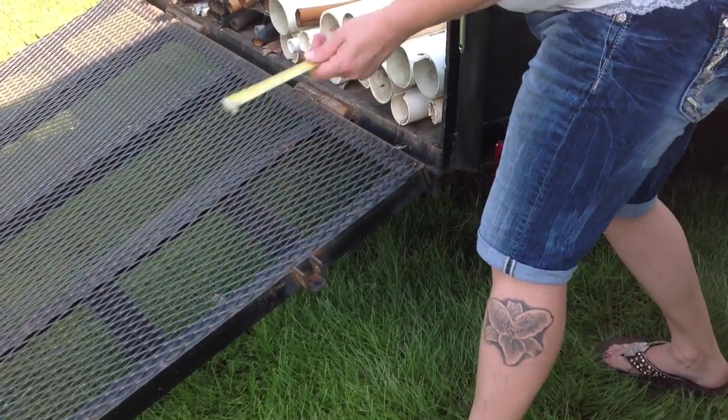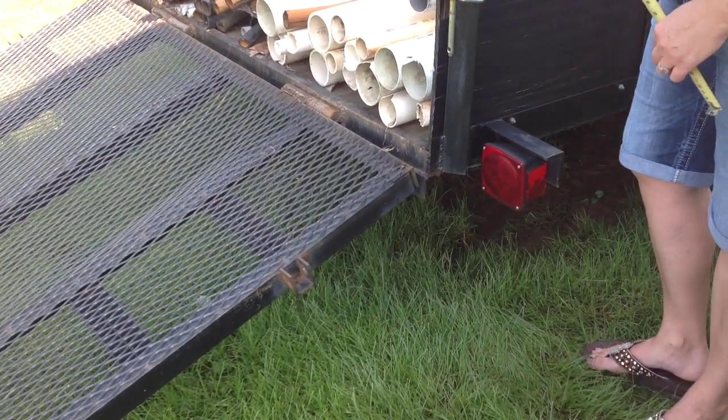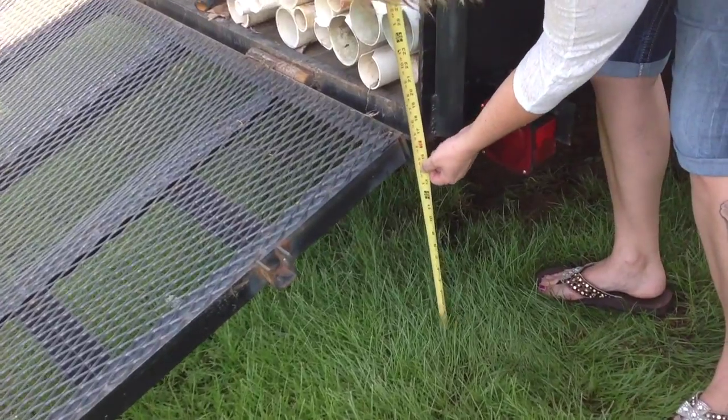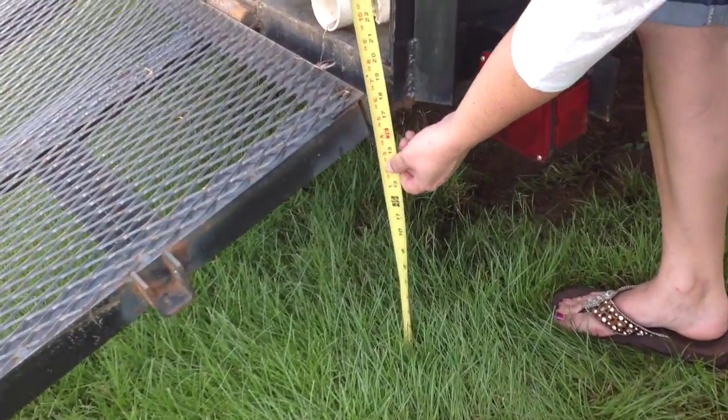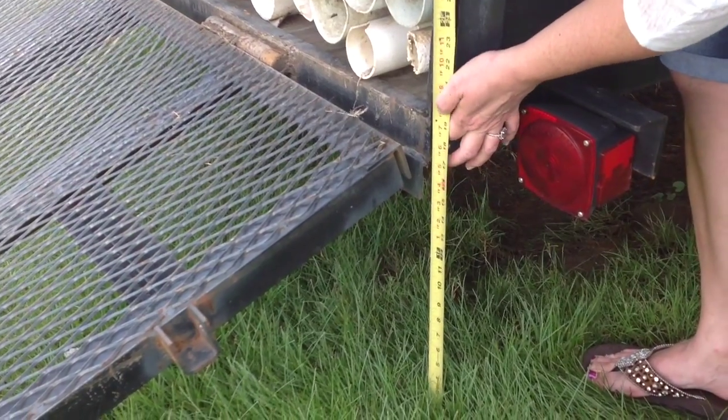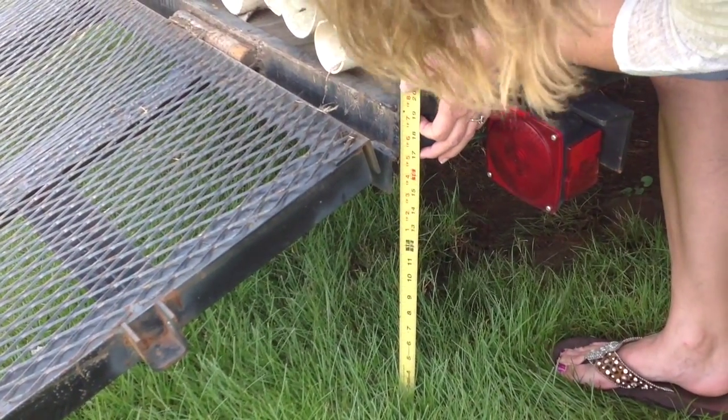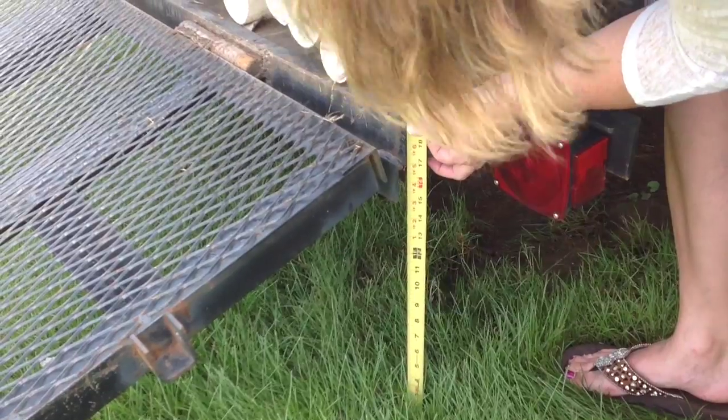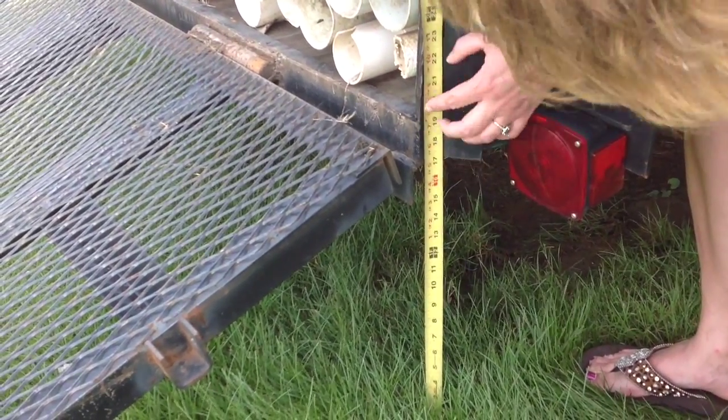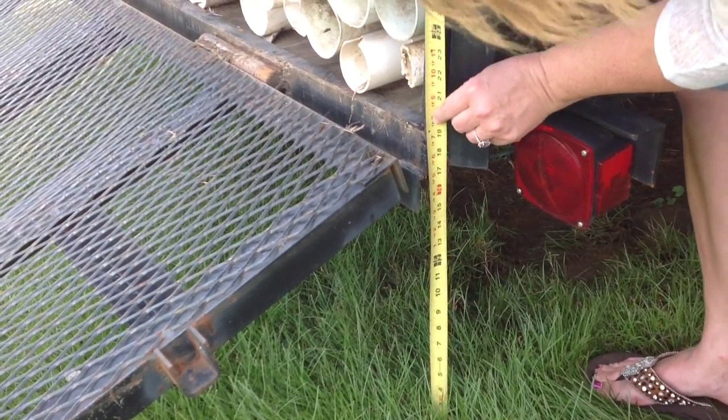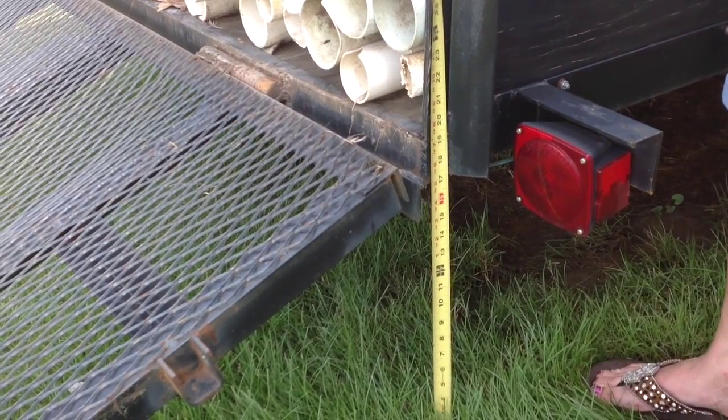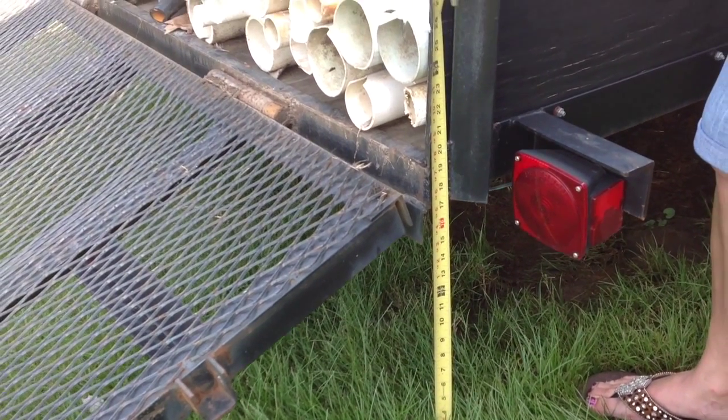Now, the height of the inclined plane is what we're calling our distance over resistance. And the height to where I measured is about to that mark right there. And it is 19 and 3 sixteenths of an inch. 19 and 3 sixteenths of an inch. And that's what we're calling our distance of our resistance.